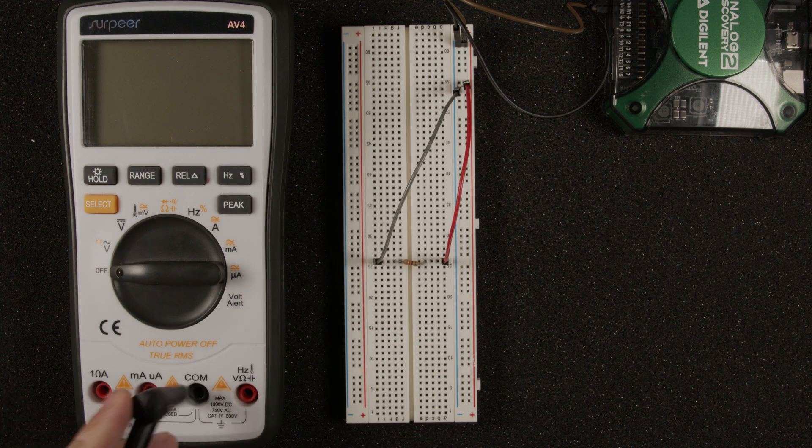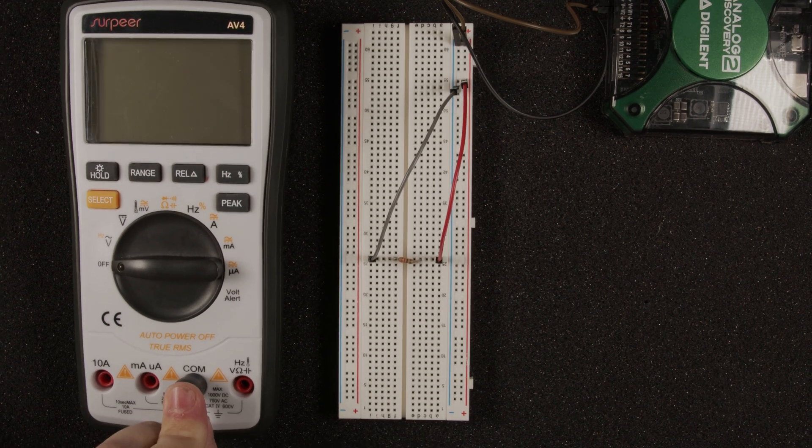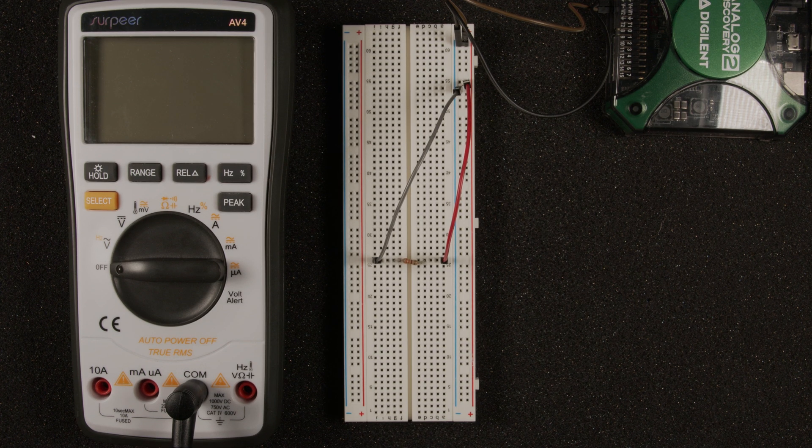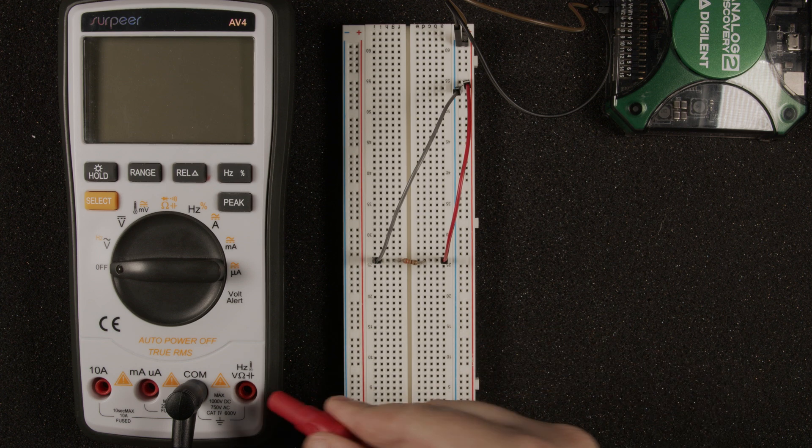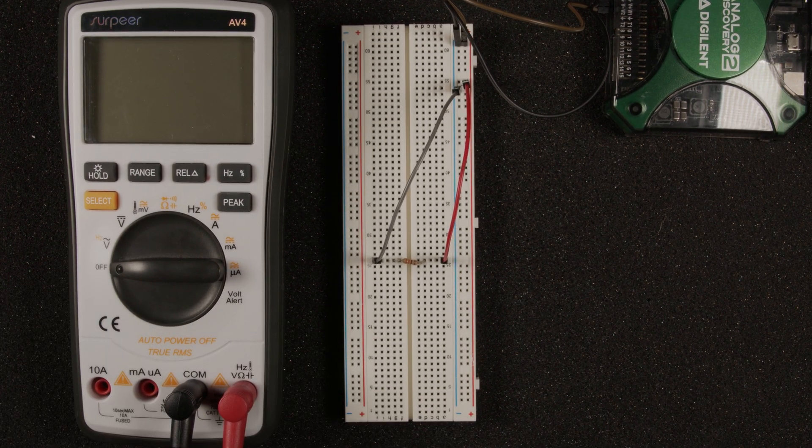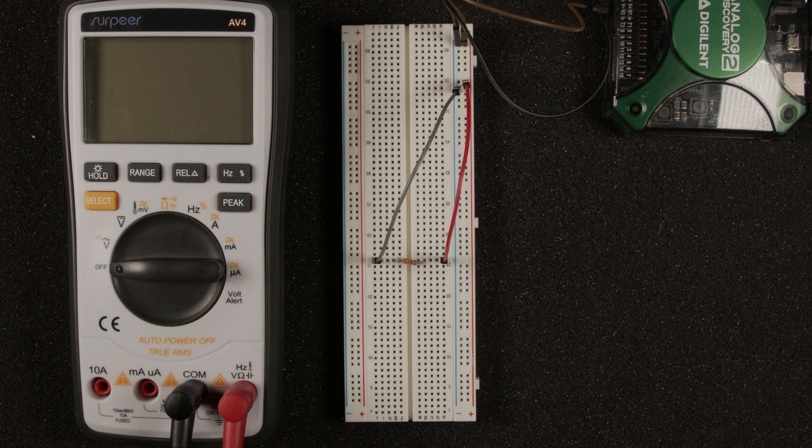To do that we first need to connect our probes to our multimeter. We're going to take the black probe and connect it to the common terminal, and this is also known as the ground. Next we need to find the terminal that has a V on it. This will tell us where we need to plug our red probe into.